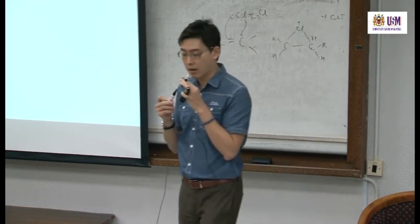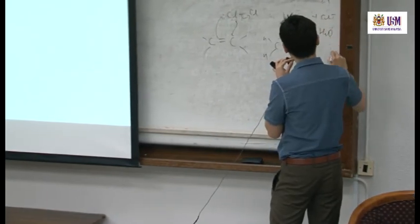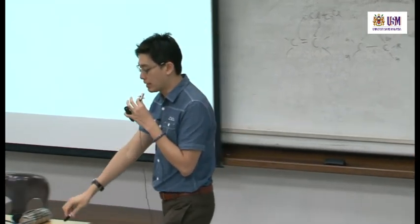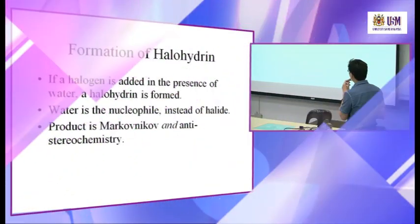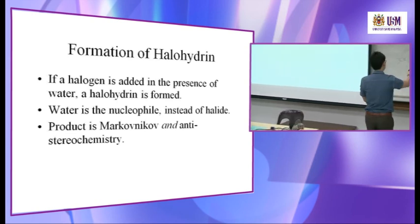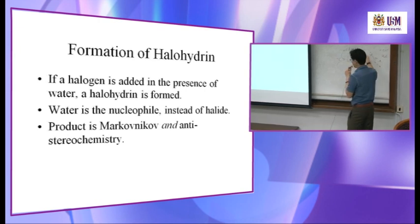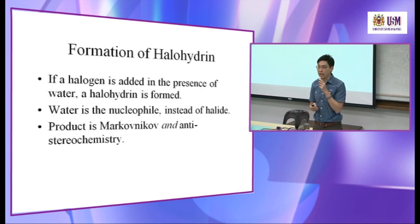This carbon is slightly more positive because it is more stable, so the chloride will attack that carbon — as you learned last time. But now in halohydrin formation, water acts as the nucleophile instead. The product follows Markovnikov's rule — the Cl is added to the carbon with more H's — and the addition is anti.